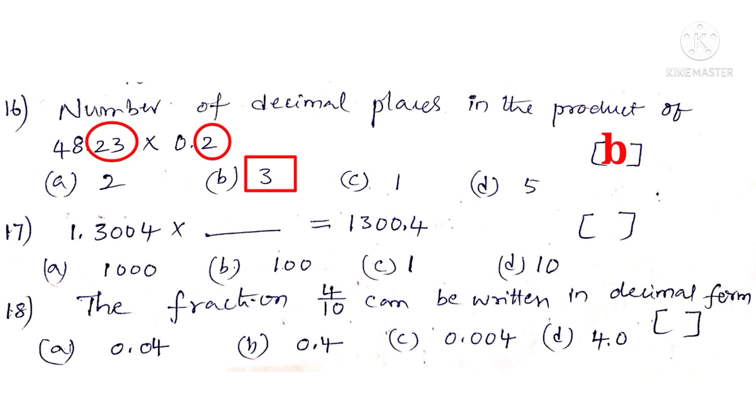Now 17. 1.3004 into which number is equal to 1300.4. Observe that the decimal point is on the left side of 300. So the correct choice is A.